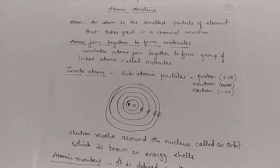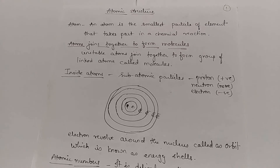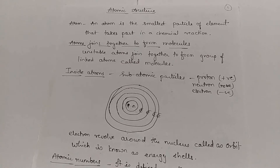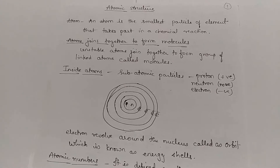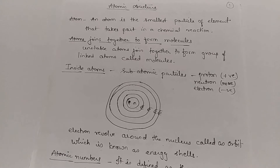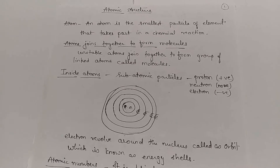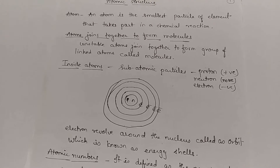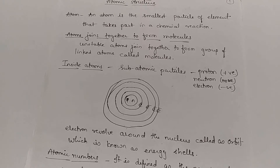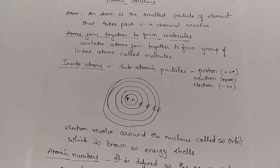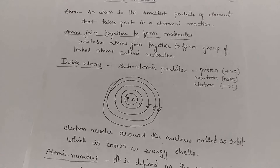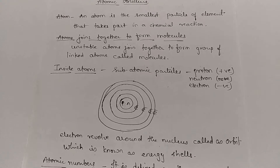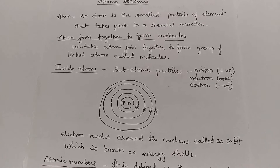In ancient times, the Indian philosopher Maharshi Kannath was the first person to propose that matter is made up of atoms, and at that time he gave the name 'Parmanu' to it.